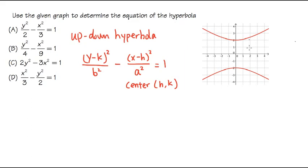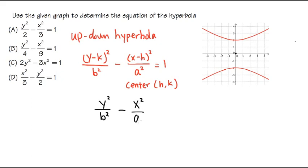As we can see, for this hyperbola right here, the center is going to be (0, 0), so that means k and h will both be 0. So we will have y squared over some number b squared, minus x squared over a squared, and this equals 1. Now we need to figure out what b and a are.